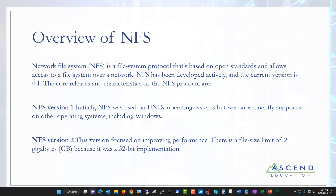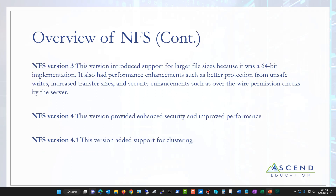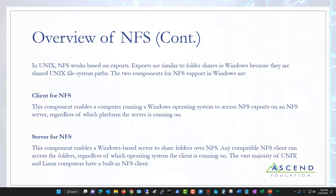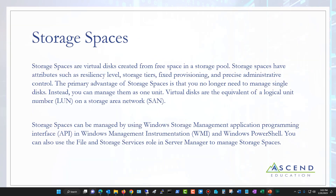NFS — Network File System — is a Linux and Unix protocol. SMB is a Windows protocol. Microsoft now understands NFS and Linux now understands SMB, so it doesn't really matter which you use since they're accessible from both systems. I'd recommend SMB because it has more options. NFS version 3 was introduced for larger file sizes using 64-bit. NFS 4 added security and improved performance. NFS 4.1 added clustering support. You just add the NFS feature component to Windows to support NFS shares.